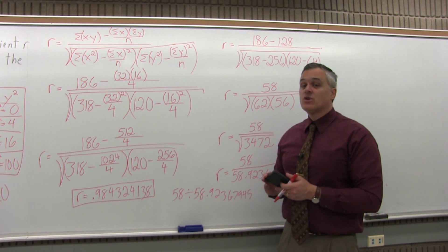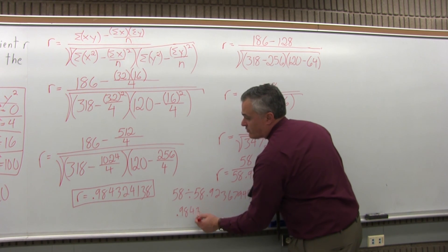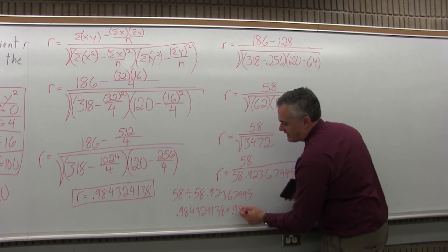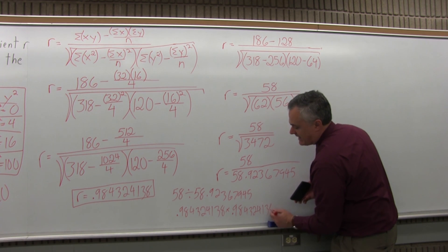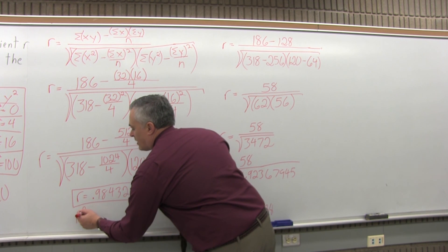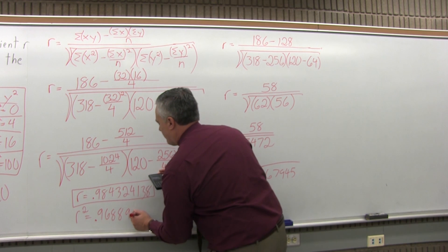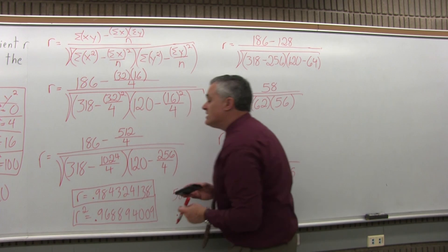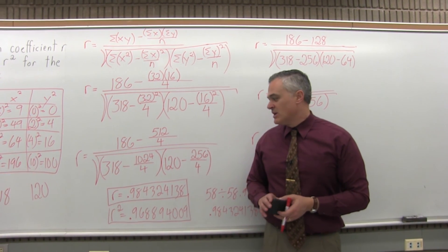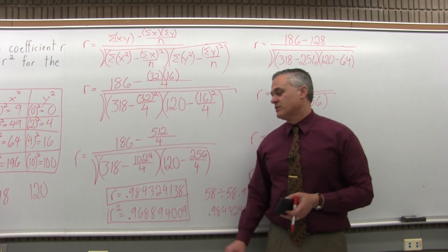The question also asks for the coefficient of determination, which is R raised to the second power. For R raised to the second power, I'm going to do that number, 0.984324138, and multiply it times itself. Calculator will do that for me. That gives me R squared, or the coefficient of determination, is equal to 0.968894009. Now, at this point, if you're doing a problem and it said round it to two places or three places after the decimal, now is when you round it for the best accuracy. That's the final answer. R is approximately 0.98 with some round off, and R squared is about 0.97 with some round off, which is super high accuracy.